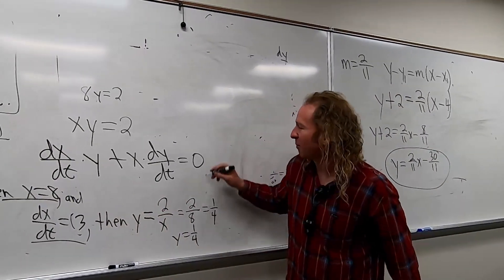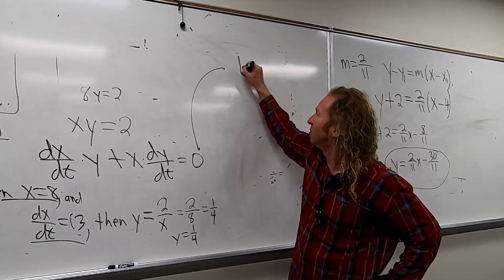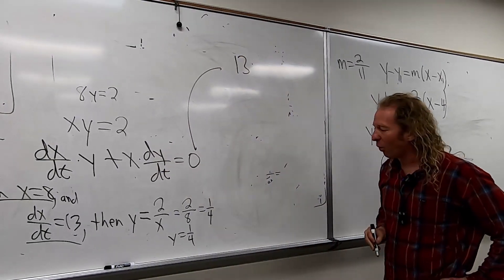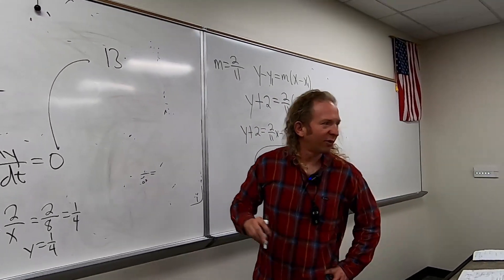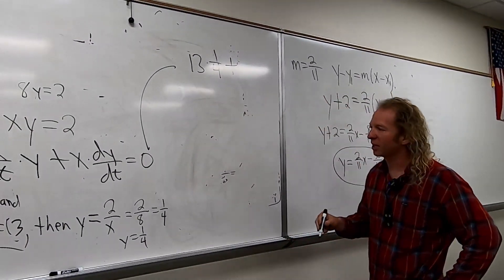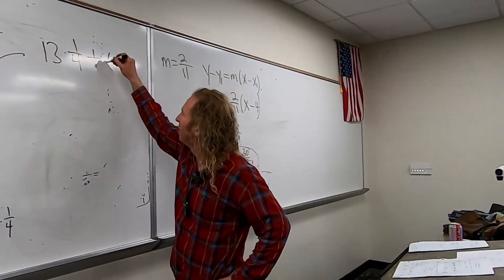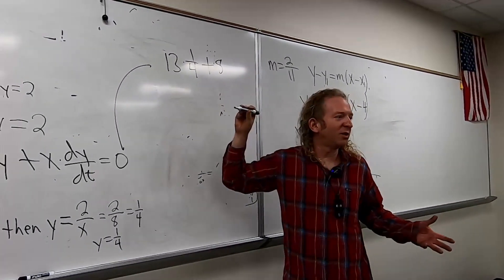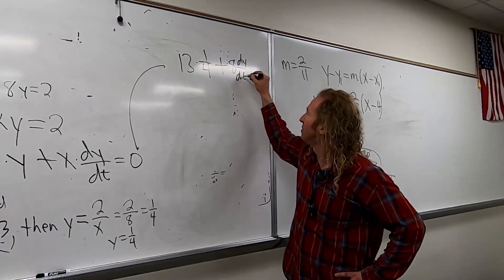So now we have this. Let's not plug everything in. So dx/dt, we know that's 13. Thank you, Josh. Y, we said, was 1 fourth, right? 1 fourth. X, we said, was, what was X? Eight. Eight. And then dy/dt, we don't have. We have to find that, right? So dy/dt. And this is equal to zero.